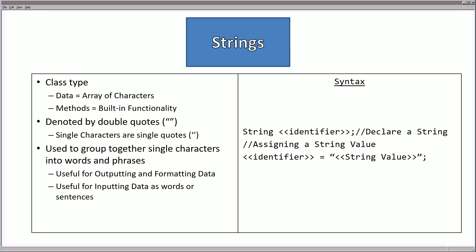Looking more specifically at a class type, let's take a look at strings. This is a class type. The data in a string can be considered as an array of characters. The methods are the built-in functionality that do operations upon the string. Strings are denoted by using double quotes. Single characters use single quotes. We use strings to group together single characters into words and phrases, which is very useful for outputting and formatting data, and also useful for inputting data such as words or sentences.